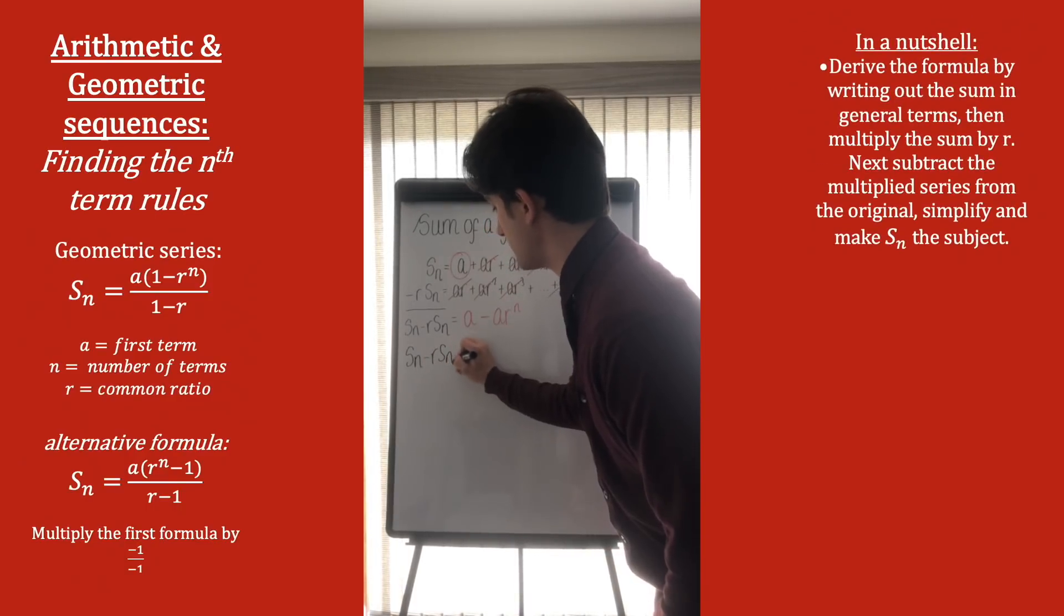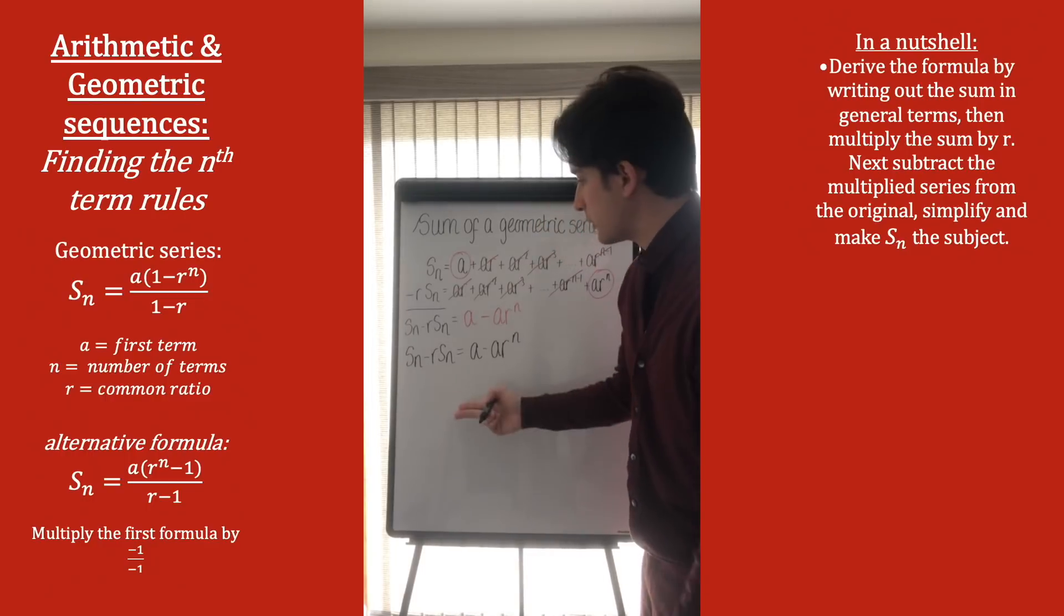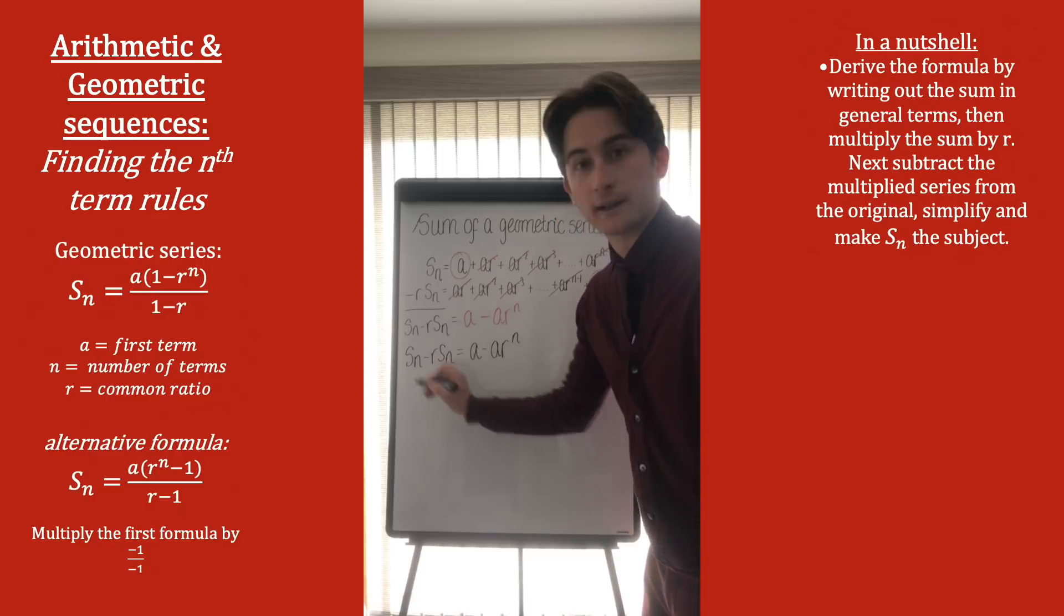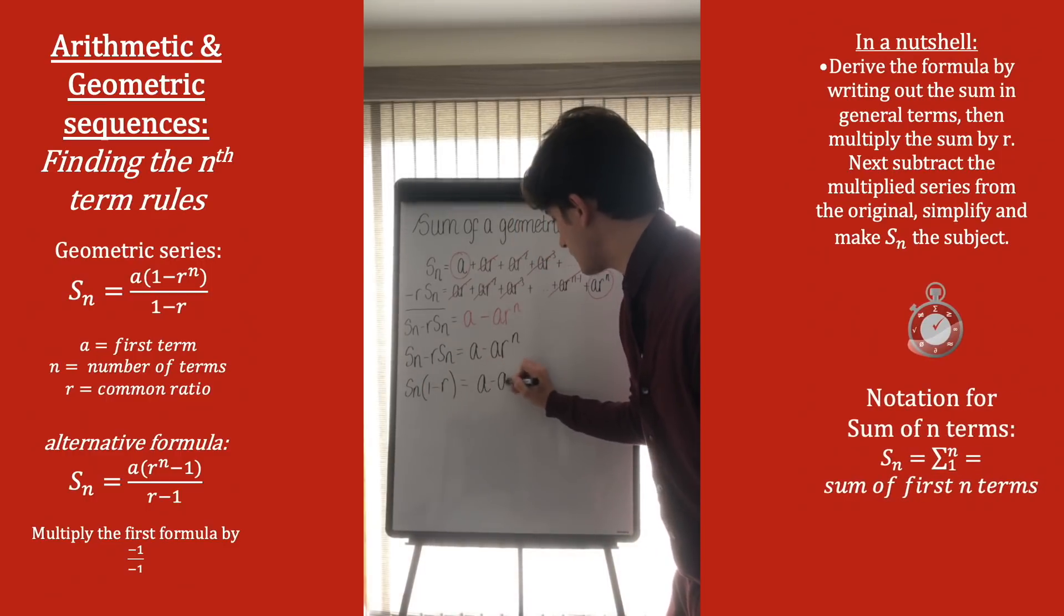So, Sn minus r lots of Sn is equal to a minus ar to the power of n. And just like we would in general with algebra, we want to make Sn the subject, we want the formula for the sum. So, we can factor out Sn, and we're left with 1 minus r, is equal to a minus ar to the n.